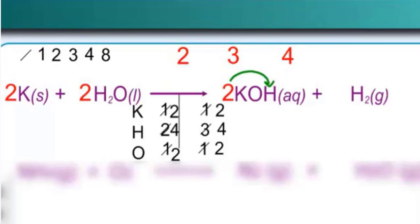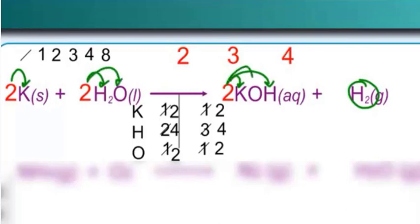You're balanced. Just to make sure, go through the original equation and double check: 2 K's equals 2 K's; 4 H's — 2 plus 2 would be 4 H's; 2 O's equals 2 O's. You're balanced. So your final answer is the equation with all coefficients included.